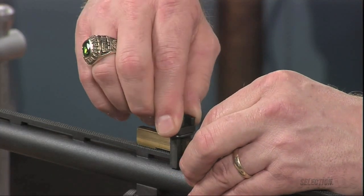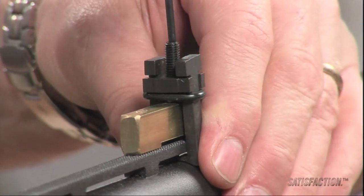The jaws are machined hardened steel and are an inch and a half long and only a half an inch wide at their widest point.